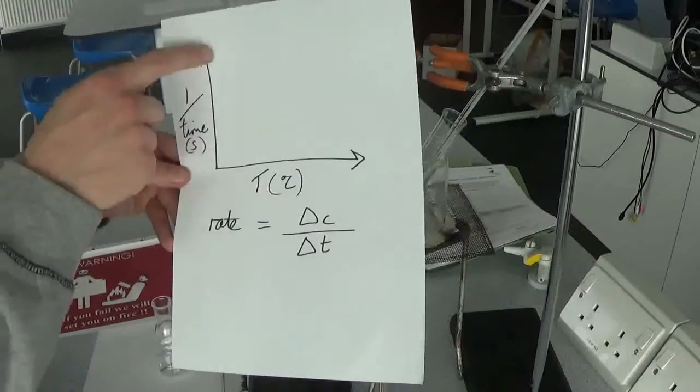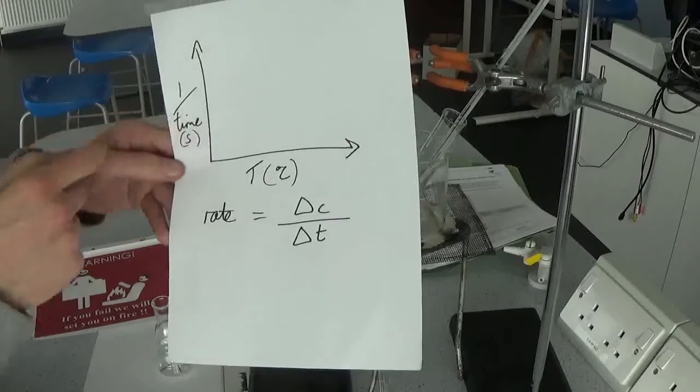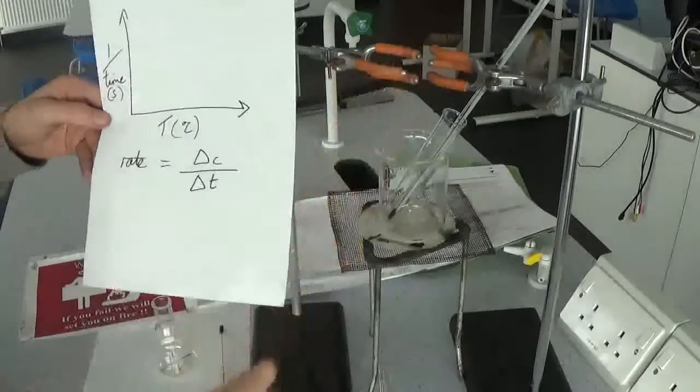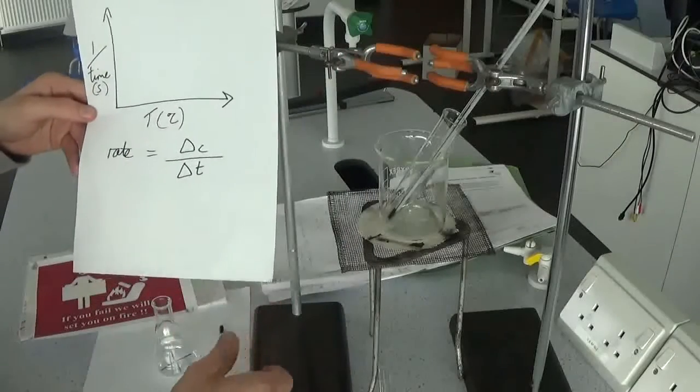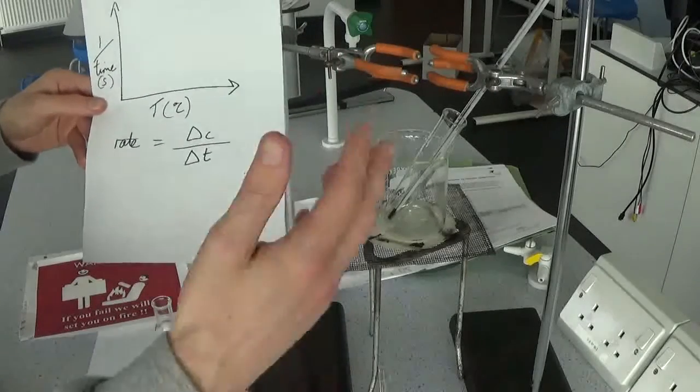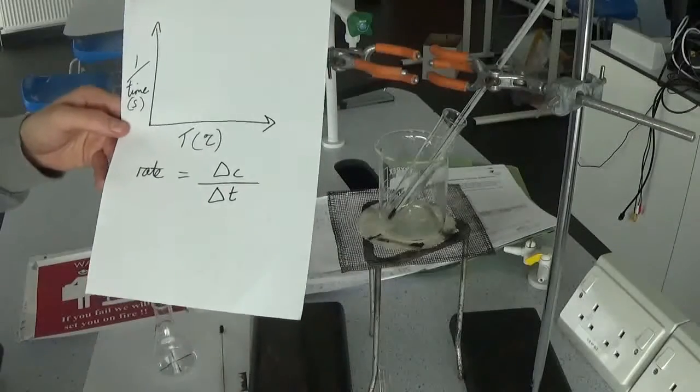So rate is going to be proportional to one over the change in time. So this is why on your y-axis you've got one over time. If it took a minute for the 35 to go, just go one over 60. If it took 40 seconds for the 50 Celsius one to go, one over 40.